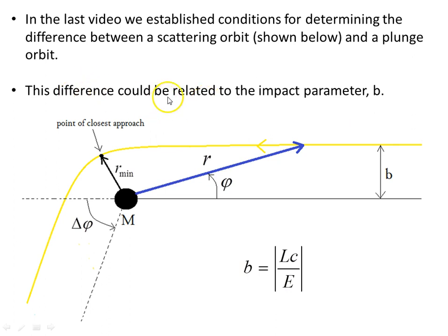This difference we found could be related to the impact parameter b. Here we have a photon, here is the path of the photon as it moves past the Schwarzschild mass here, point of closest approach. It goes through, the orbit changes direction, the path changes direction by this angle here, delta phi.